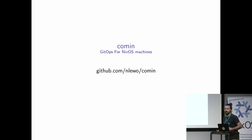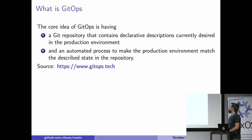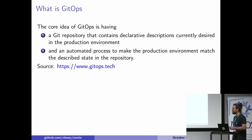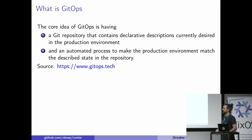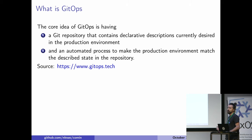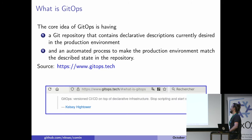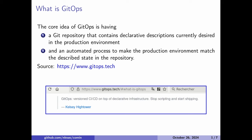I will start by apologizing, because there is now one more deployment tool in our NixOS ecosystem. First of all, a few words about what GitOps is. There is no Wikipedia page, I did not find any formal definition, but I found this website, gitops.tech. They propose a definition, and I will translate it in NixOS terms. Someone is saying GitOps is a versioned CI-CD on top of declarative infrastructure. And they said, stop scripting and start shipping.